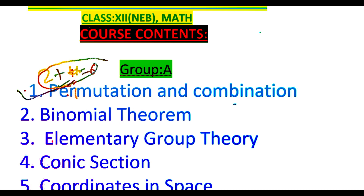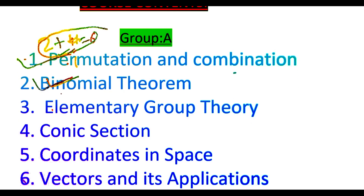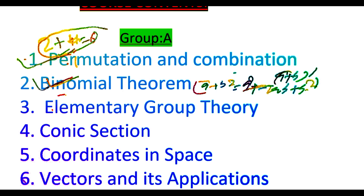The second topic is binomial theorem. Binomial theorem is related to the expansion of binomial expressions. For example, if we have (a + b)², we know the formula: a² + 2ab + b². But in the case of (a + b)^10, it is difficult to expand. So the expansion of such expressions and many other things will be discussed under this topic.